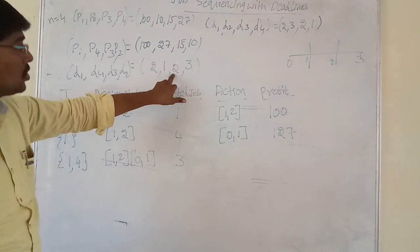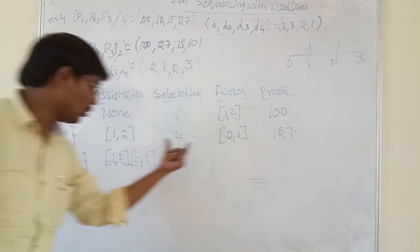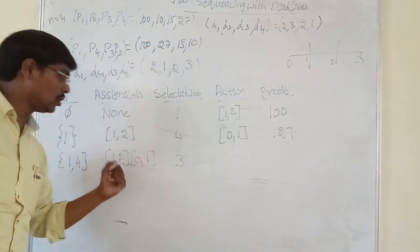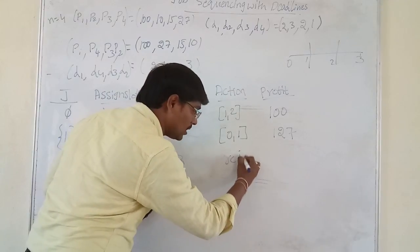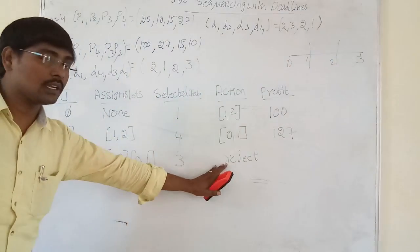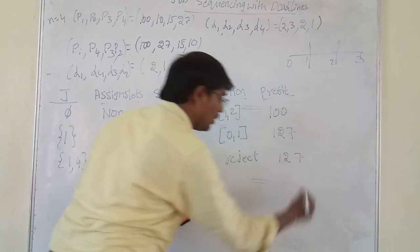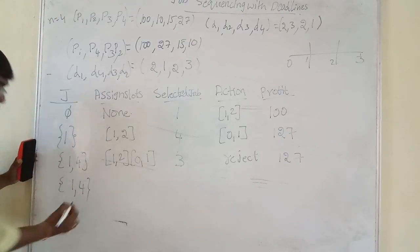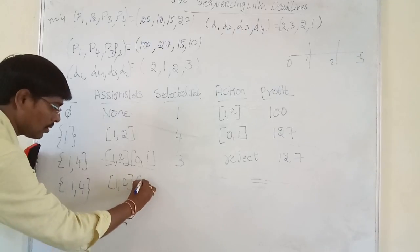Next we select Job 3. The deadline for Job 3 is 2, so we try to allocate slot (1, 2), but slot (1, 2) is already allocated. We then move to slot (0, 1), but (0, 1) is also already allocated. There is no place for executing Job 3, so the action is to reject it. We get no profit, and the total remains 127.